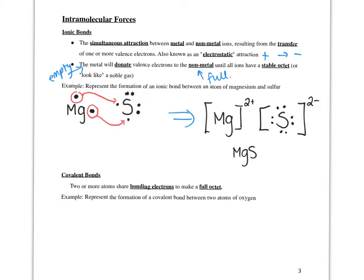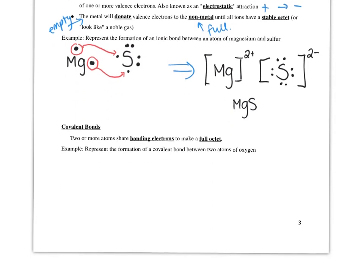Covalent bonds are still involving electrons. However, instead of transferring electrons, we are going to share bonding electrons to make a full octet. Bonding electrons are the unpaired electrons in an element.